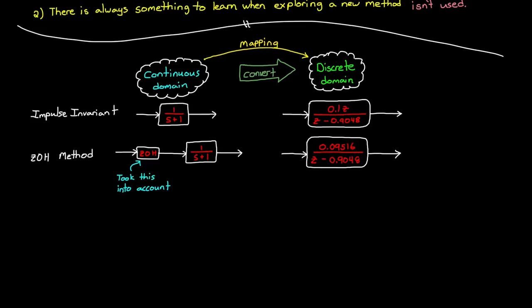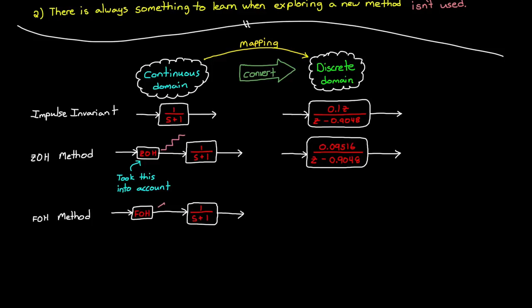Now, we didn't cover the first-order hold method. However, it assumes that for the analog-to-digital converter, rather than holding the last sample constant like it does with a zero-order hold, it instead holds the slope constant and produces a series of ramps rather than steps. Now, you can do out the math like we did for the zero-order hold method and find the transformation. But this method is also referred to as the ramp invariant method, hopefully for obvious reasons.